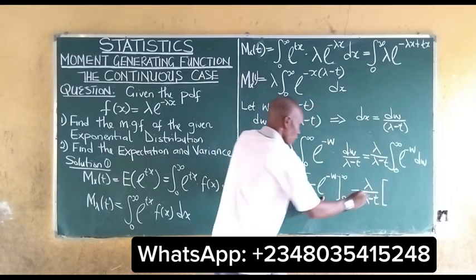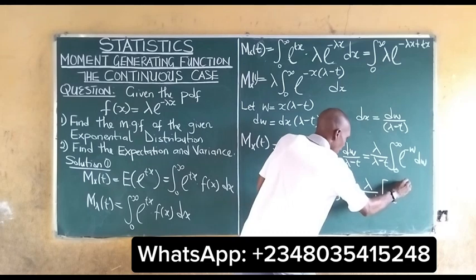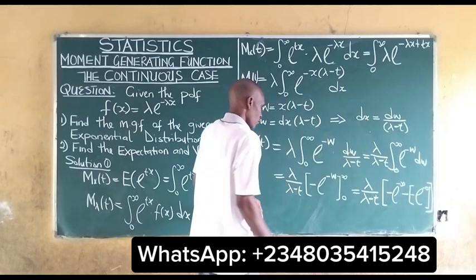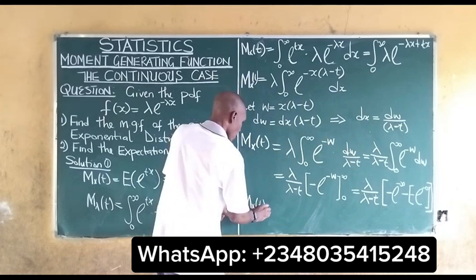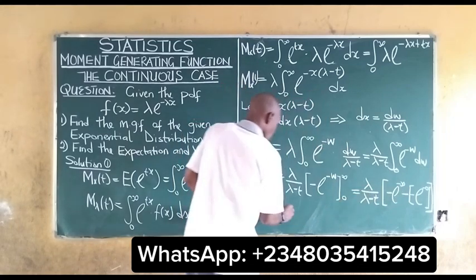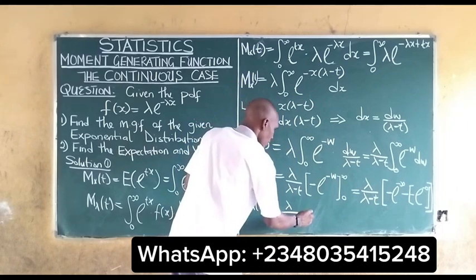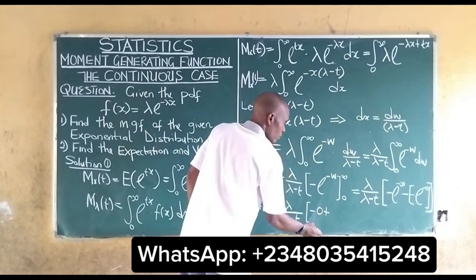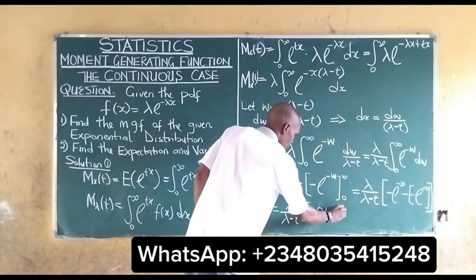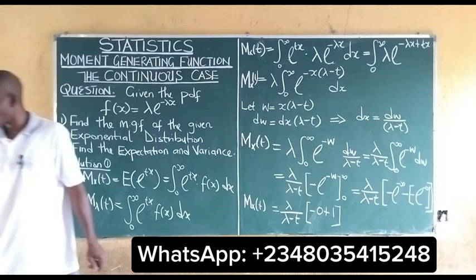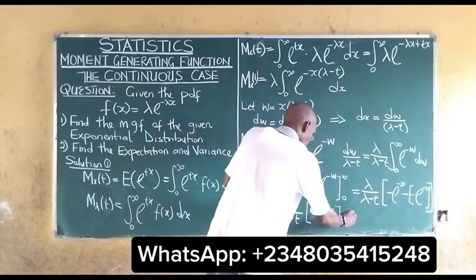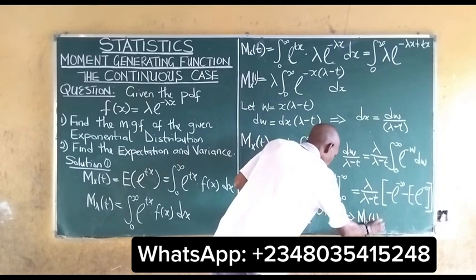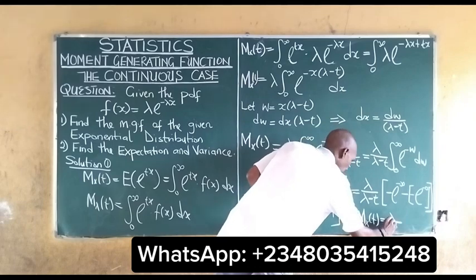Evaluating the limits using calculus: we substitute infinity and zero. We get negative e^(−∞) minus negative e^(0), which gives us 0 plus 1 equals 1. Therefore our moment generating function M(t) equals λ over (λ − t).